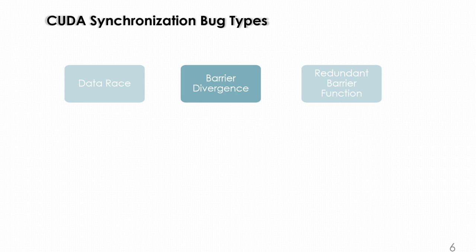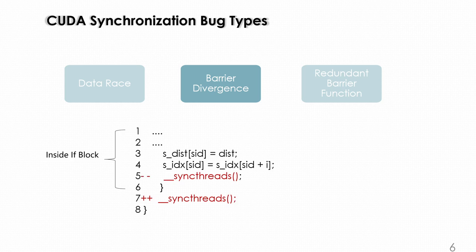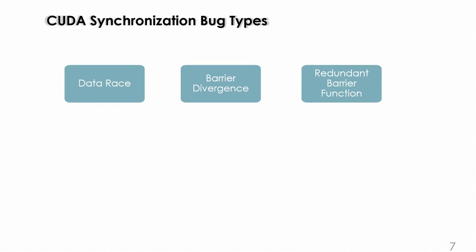What is barrier divergence? When more than one thread belonging to the same block completes the task and leaves the barrier, while some other threads in the same block have not reached the barrier yet. From line 1 to line 6, they are within an if block, and thread 1 can reach this barrier function while thread 33 cannot. We call this barrier divergence.